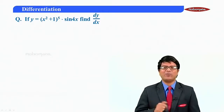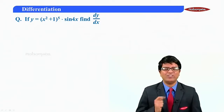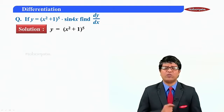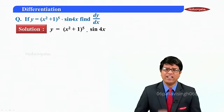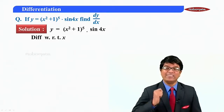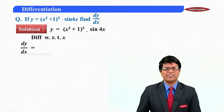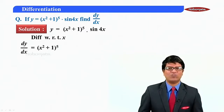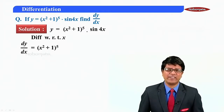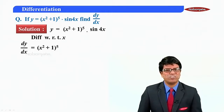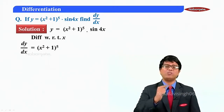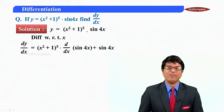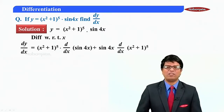The function is y = (x² + 1)⁵ · sin(4x). Let us differentiate with respect to x. The derivative dy/dx has two variables separated by multiplication, so we use the product rule: first · d/dx(second) + second · d/dx(first). That gives us (x² + 1)⁵ · d/dx(sin 4x) + sin(4x) · d/dx of (x² + 1)⁵.